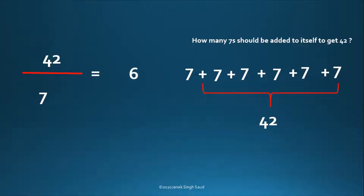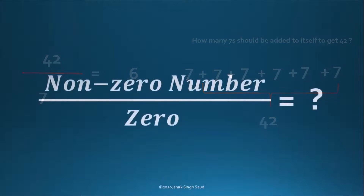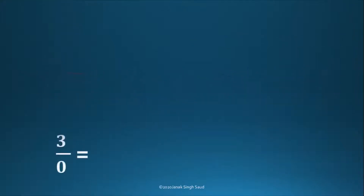Is it clear about division? Now let's talk about divided by zero. For this, let's take 3 by 0. The question we ask ourselves is: how many zeros do we need to add to each other to get to 3?